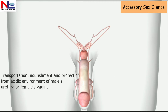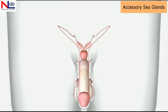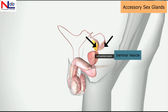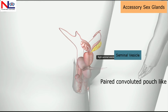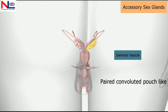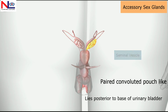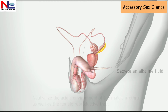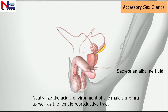The seminal fluid provides sperm with a transportation medium, nourishment, and protection from the acidic environment of the male urethra and the female vagina. The fluid is contributed by the seminiferous tubules and various accessory glands. The first of these are the paired seminal vesicles — convoluted pouch-like structures which lie posterior to the base of the urinary bladder.